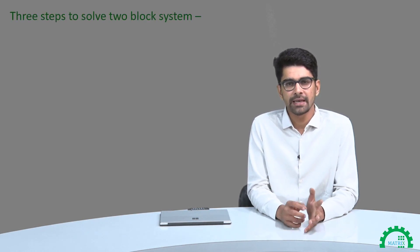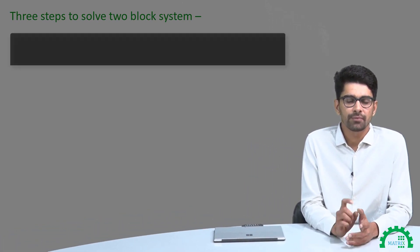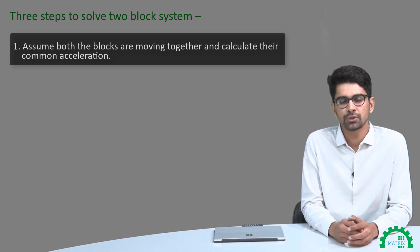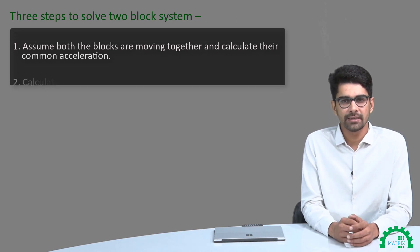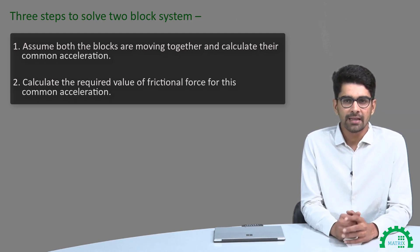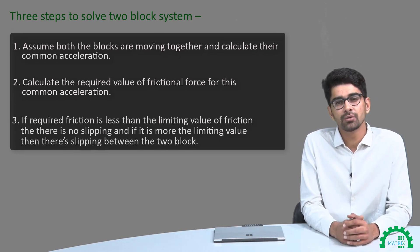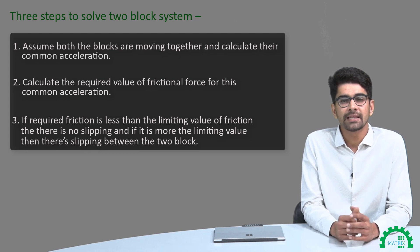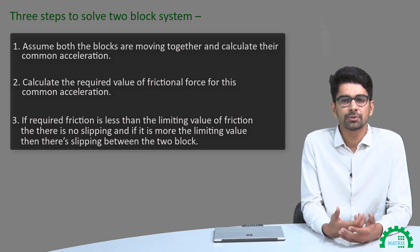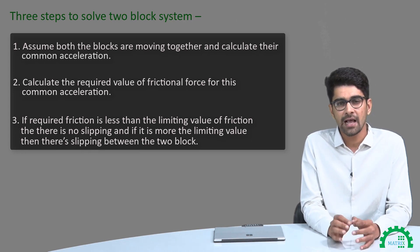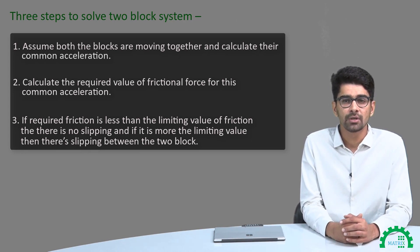To summarize all this, let's break it down into three simple steps to solve any 2-block system. Step one: assume that both the blocks are moving together and calculate the common acceleration of both blocks due to the external forces on the system. Step two: after finding this common acceleration, calculate how much frictional force is required to maintain this common acceleration. Step three: if this required frictional force is less than the maximum value that friction can have — that is, the limiting value of friction — then there won't be any slipping, because friction is sufficient to provide that value. But if the required frictional force is more than the limiting value, then slipping will occur.